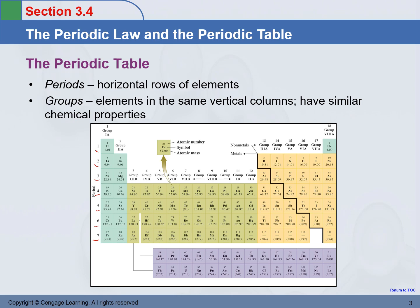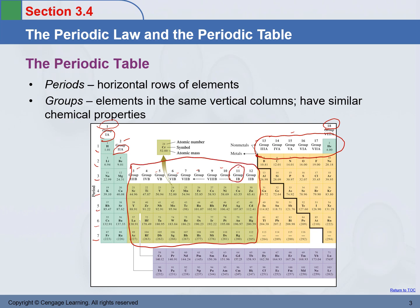There are actually two different ways to label the columns. One way goes from 1 to 18 — there are 18 columns altogether. Another way is to use a Roman numeral plus capital letter A or capital letter B. All the elements in the table are divided into A groups and B groups: 1A, 2A, 3A through 8A are the A groups. The B groups are 1B, 2B, and 3B through 8B — and in 8B there are actually three columns.